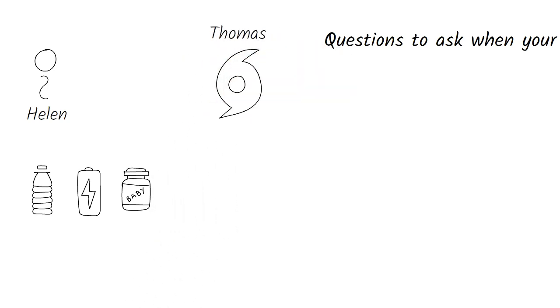Hurricane Thomas would make landfall at Virginia Beach in about six hours. Helen heard from her friends that the supermarket had run out of essential items like water, batteries, and baby formula.